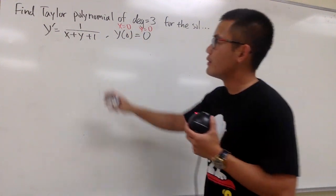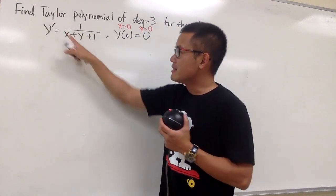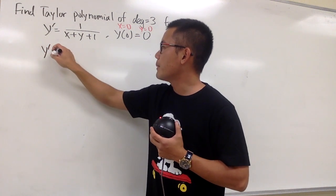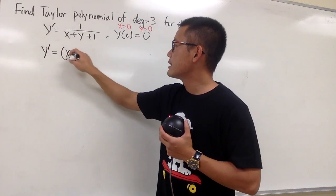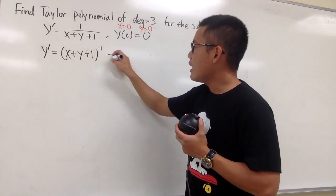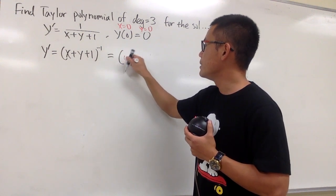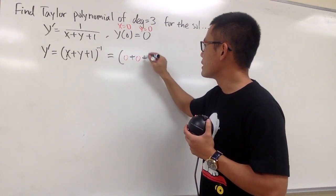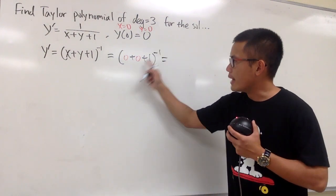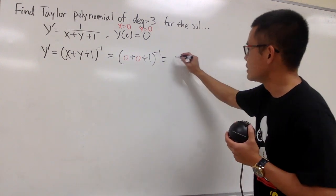This is the first derivative, and we have to do two more. This is not a formula we like to differentiate, so let me write this as y' equals (x + y + 1) raised to the negative 1 power. Now I can plug in 0 for x and 0 for y. This gives us (0 + 0 + 1) to the negative 1 power, which is 1 to the negative 1, or 1 over 1 — so y'(0) = 1.